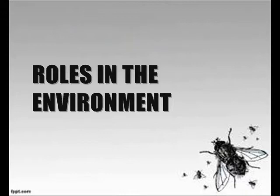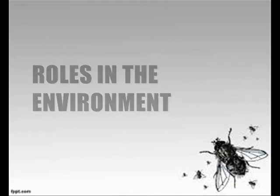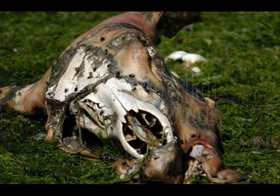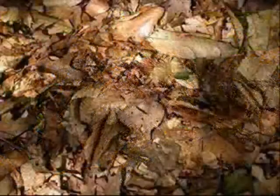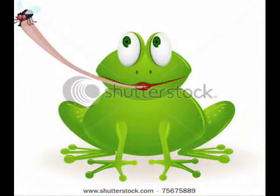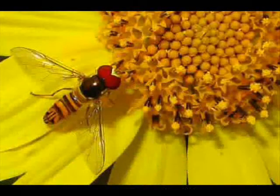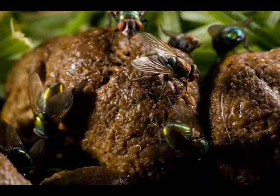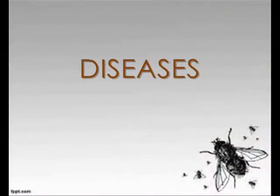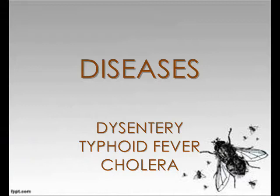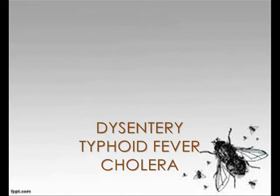Let's now identify the roles of flies in the environment. Flies are very important in consuming and eliminating dead bodies of animals, and are essential in the conversion of feces and decaying vegetation to soil. Flies serve as prey to many other animals, and some aid in pollination. However, because of their habits of being attracted to feces and garbage, flies have been implicated in the transmission of diseases such as dysentery, typhoid fever, and cholera.